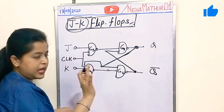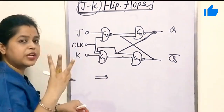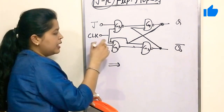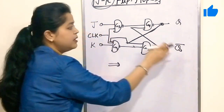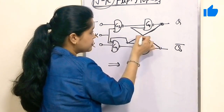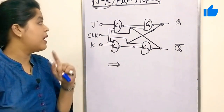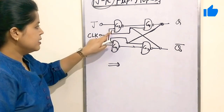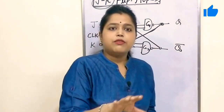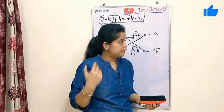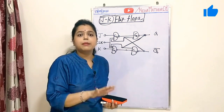The output Q is connected at its main input. So G4 gate now has three inputs: the first is K, the second is clock, and the third comes from the feedback connection from Q. Similarly, Q bar works as a feedback connection for G3. So G3 has three inputs: J, clock, and Q bar. This is the main circuit diagram for JK flip-flop — SR flip-flop with feedback connections — used to remove the uncertainty problem from SR flip-flop.